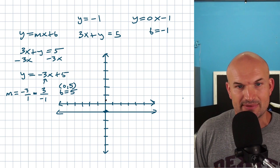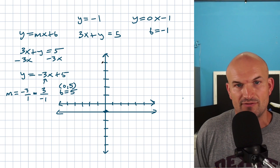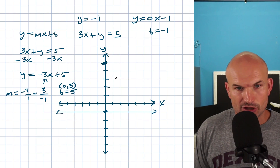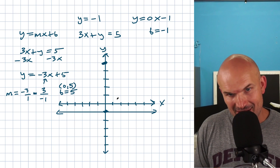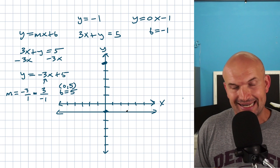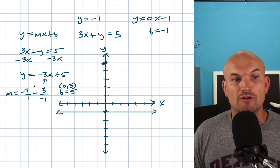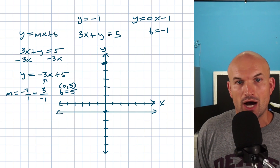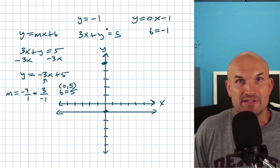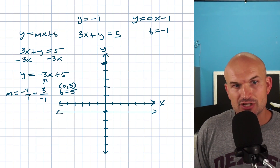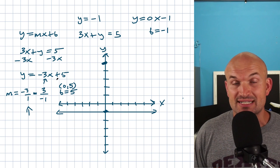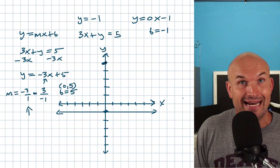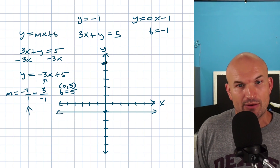So let's go to our y-intercept at 5 on the y-axis. Now my goal is to go down and to the right to find where these lines intersect. I don't want to use positive 3 over negative 1 because that goes up 3 to the left — I want to go down and to the right. So I'll use the slope negative 3 over 1: go down 3 and to the right 1. Between any two points you go down 3 to the right 1.